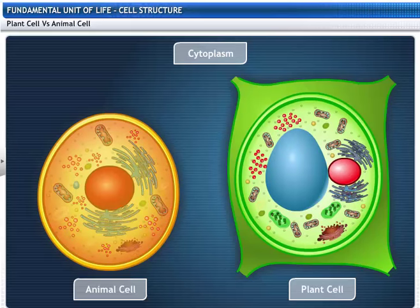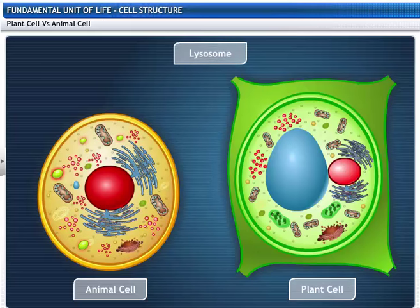In animal cells, the cytoplasm is dense and fills the entire cell. Plant cells have fewer or no lysosomes compared to animal cells.